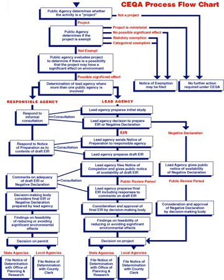BAAQMD also recommends using URBEMIS air modeling software to calculate GHG emissions on land use changing projects, and ROADMOD software for linear projects. BAAQMD recommends analysis of operational emissions in a five-step process: eliminate greenhouse gas analysis if project attributes do not pass screening criteria; quantify emissions using appropriate models; compare unmitigated emissions with thresholds of significance; implement mitigation measures if the project is over thresholds of significance; then compare emissions again with thresholds of significance.